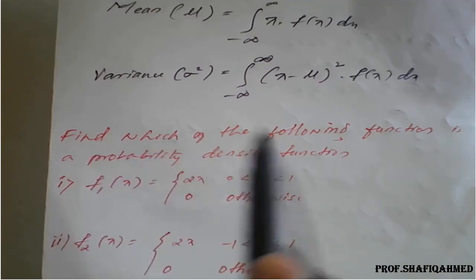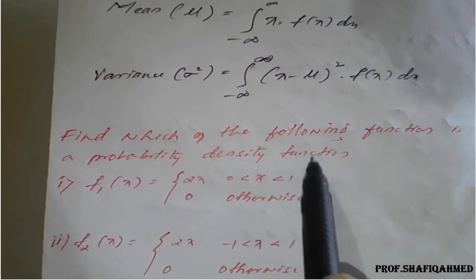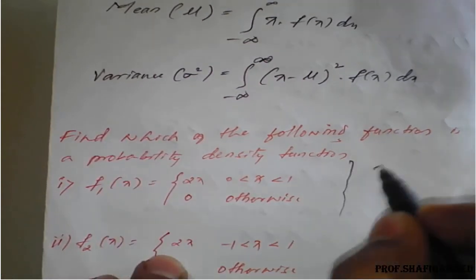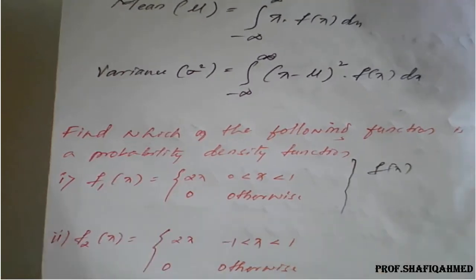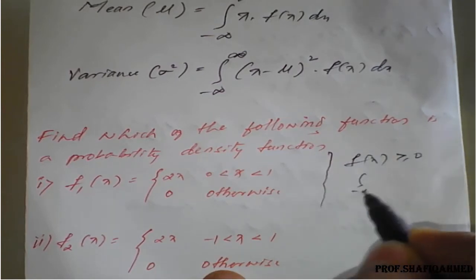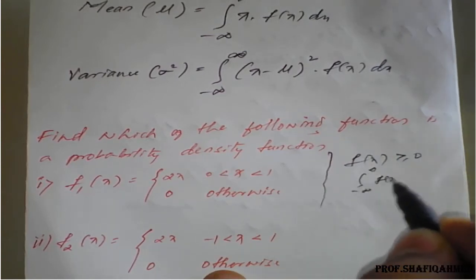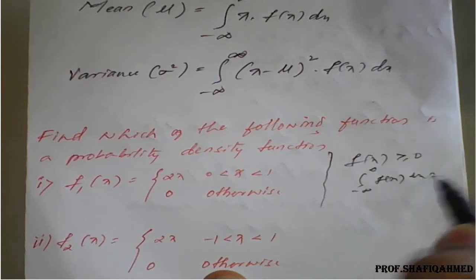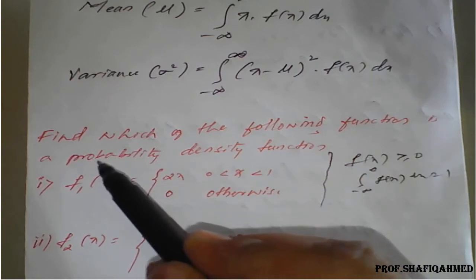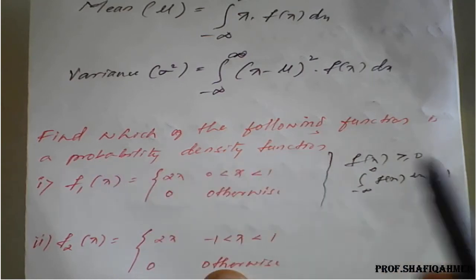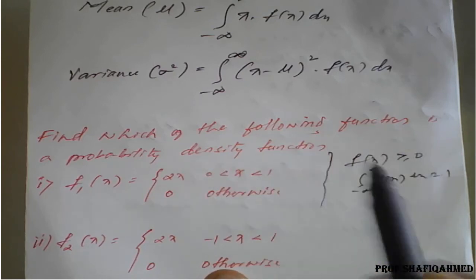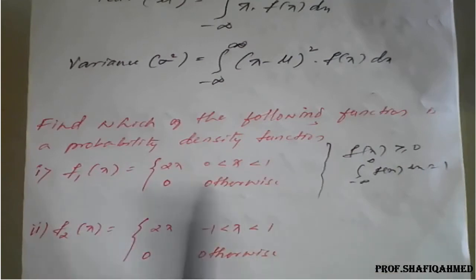The first practice example: find which of the following functions is a probability density function. To check whether f(x) is a PDF, we need to verify that f(x) ≥ 0, and that the integral from minus infinity to plus infinity of f(x) dx equals 1. If both conditions are satisfied, then the given function is a probability density function. If any one fails, then it is not a probability density function.